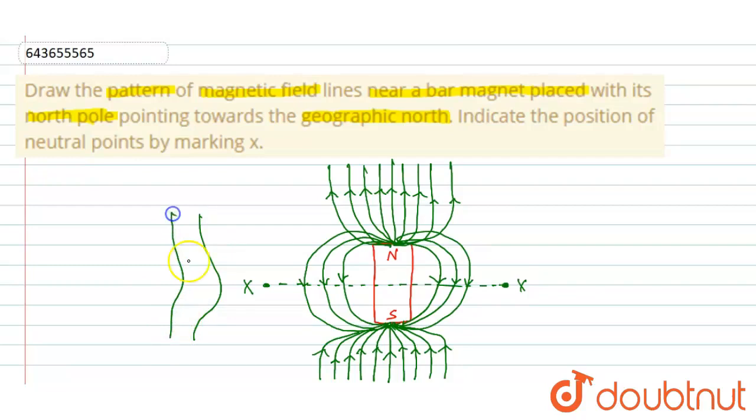Because at that point, the magnetic strength of the bar magnet is too much low, and some magnetic field are very straight of the geographic north. Same like this.